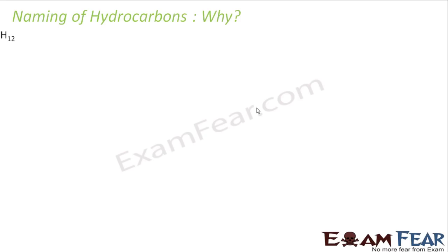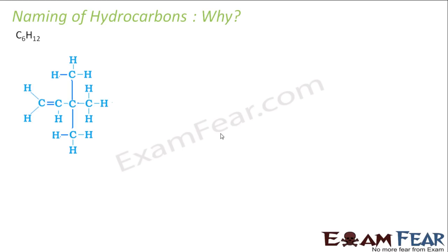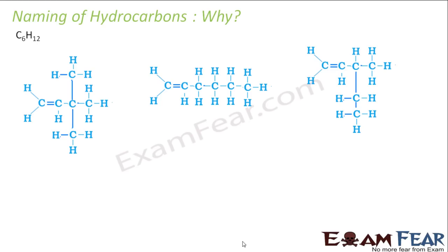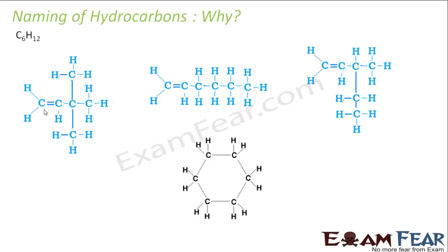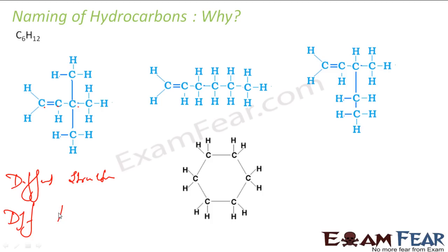Let's go over the naming of hydrocarbons. The first question is: why should we name hydrocarbons? Take C6H12 as an example. I can write C6H12 in multiple ways — like this, or like this, or like this. All of these are C6H12, and each has 6 carbons and 12 hydrogens, but all these have different structures. Not only different structures, but different properties as well. And that is one reason why we need naming, because just by telling C6H12, you can't say which hydrocarbon I am talking about.